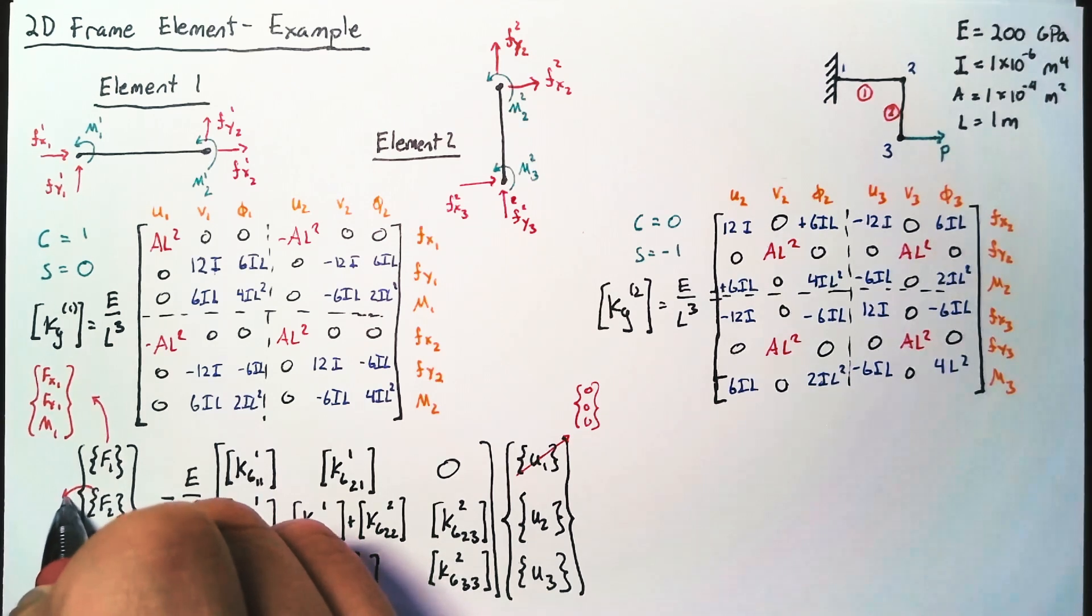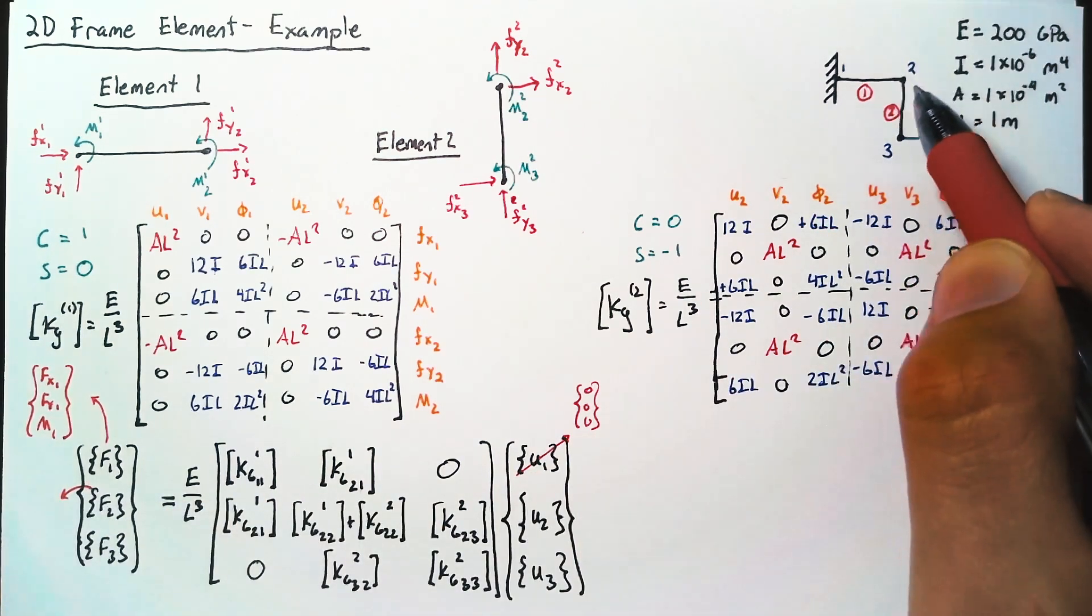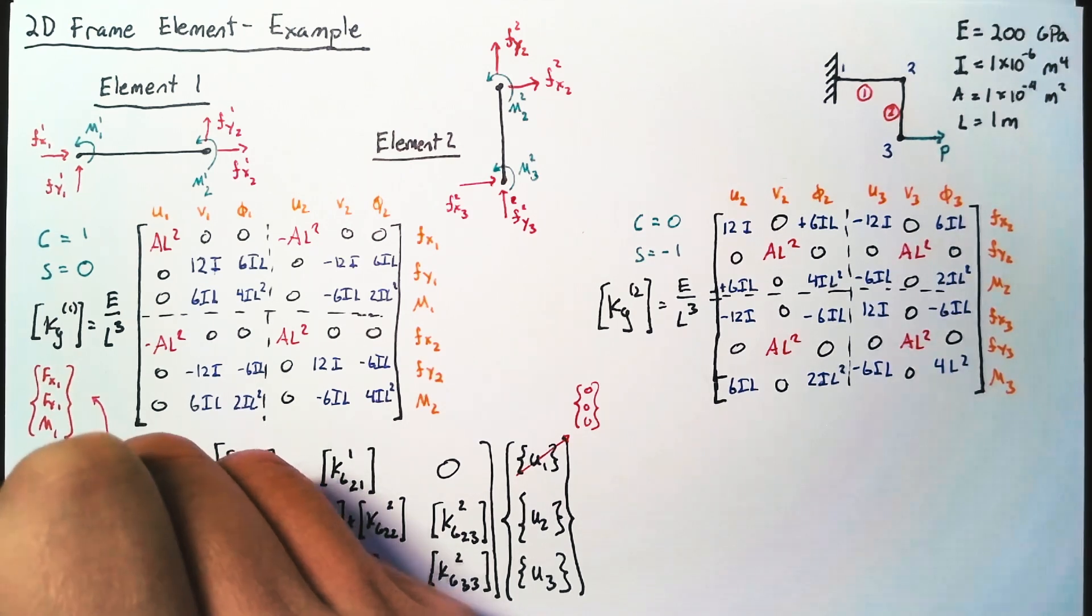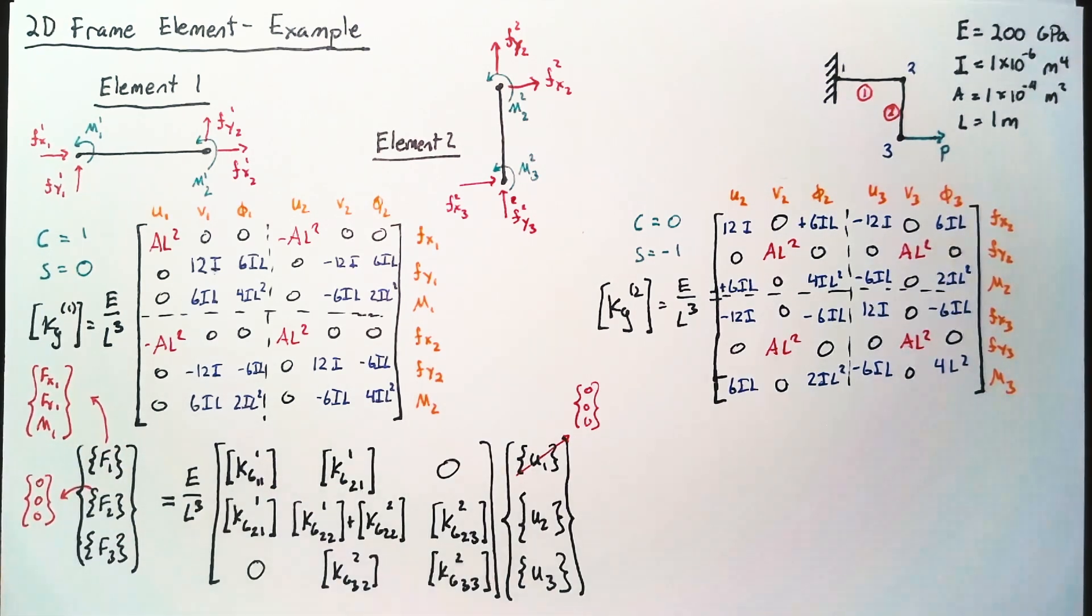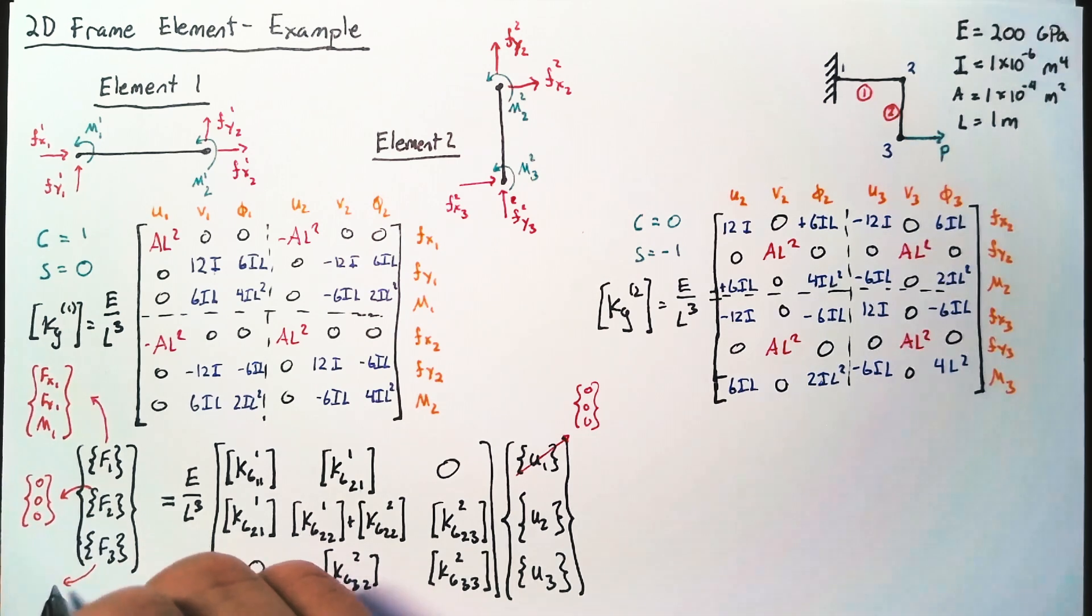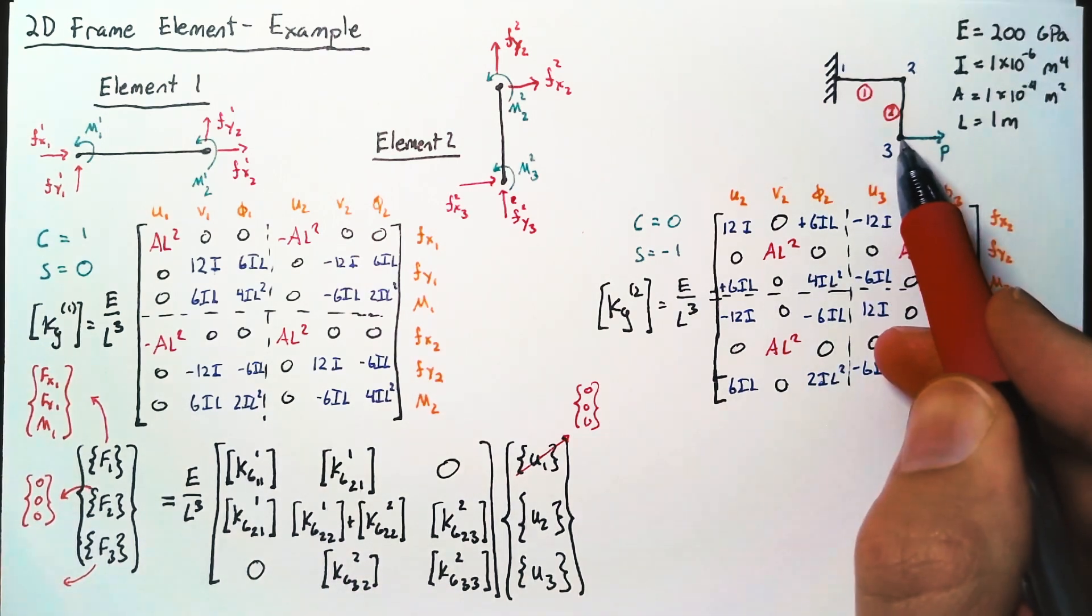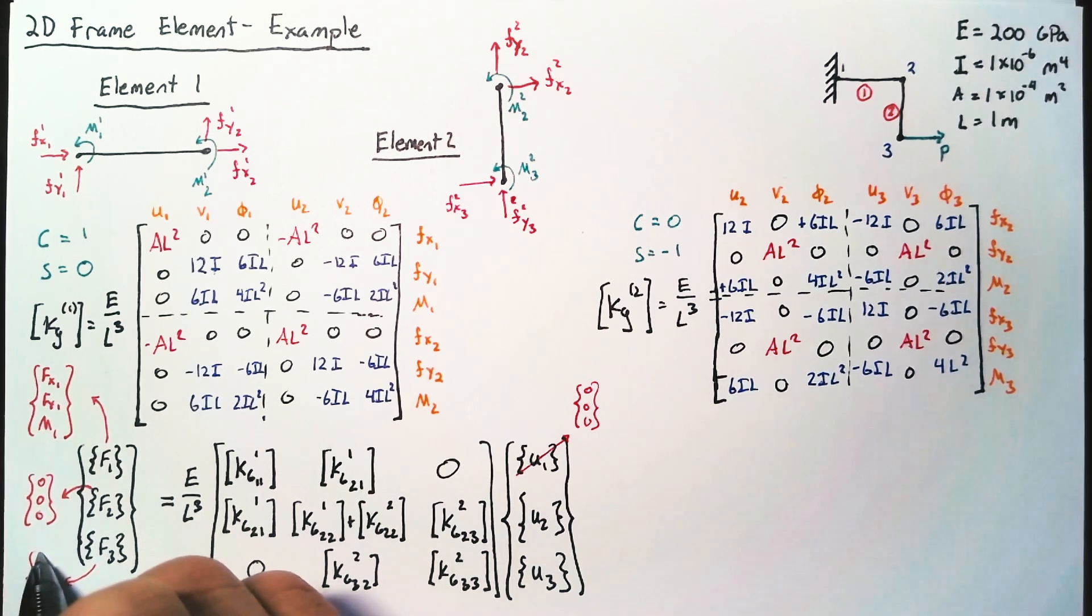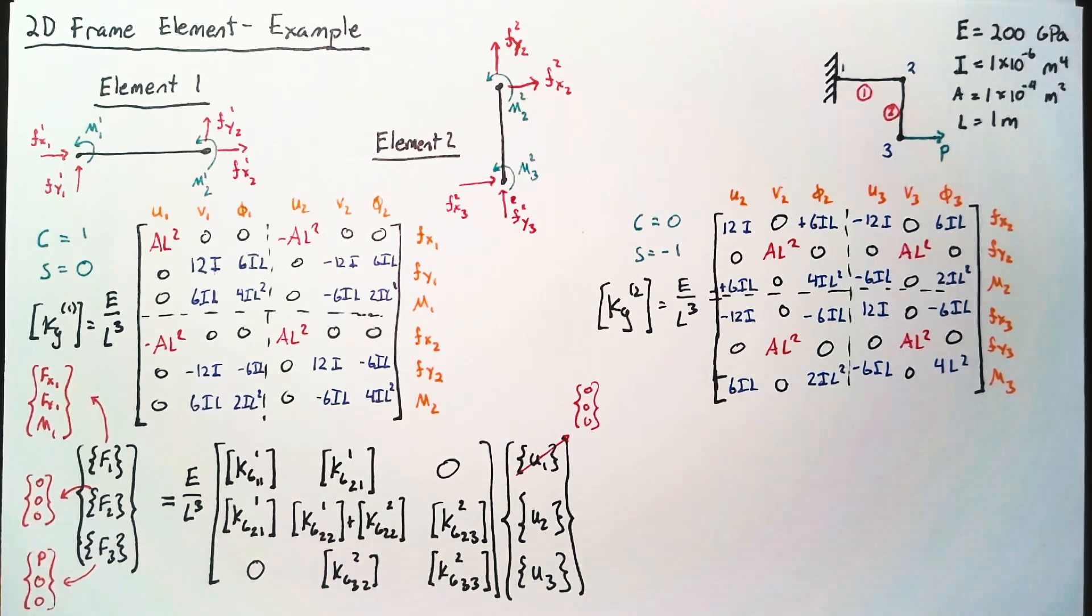The forces on node 2, well, we have no external forces on node 2. So this is just a vector of zeros. And then for node 3, we have a force p in the x direction. So our x component here is going to be p, and the other two are going to be zeros.